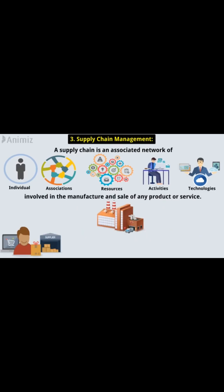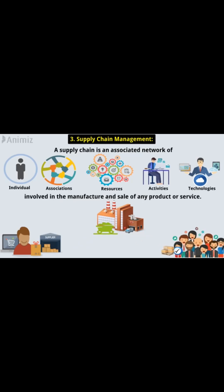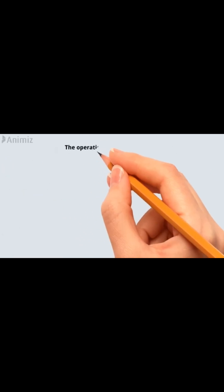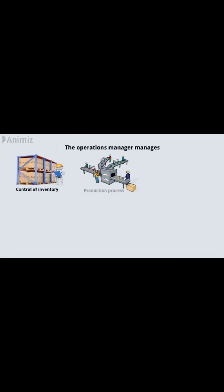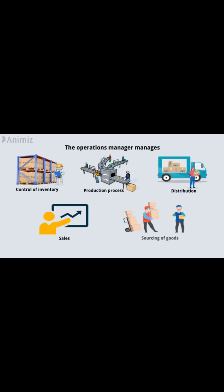A supply chain starts with the delivery of raw materials from a supplier to a manufacturer, and ends with the delivery of the completed goods or services to the customer. The operations manager manages control of inventory, the production process, distribution, sales, and sourcing of goods at acceptable prices.